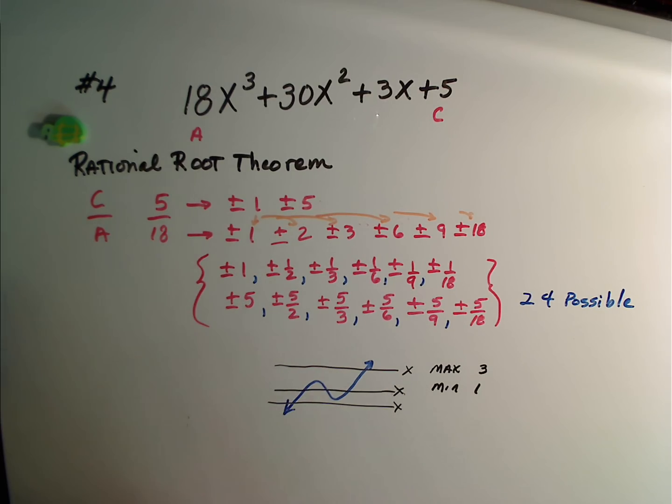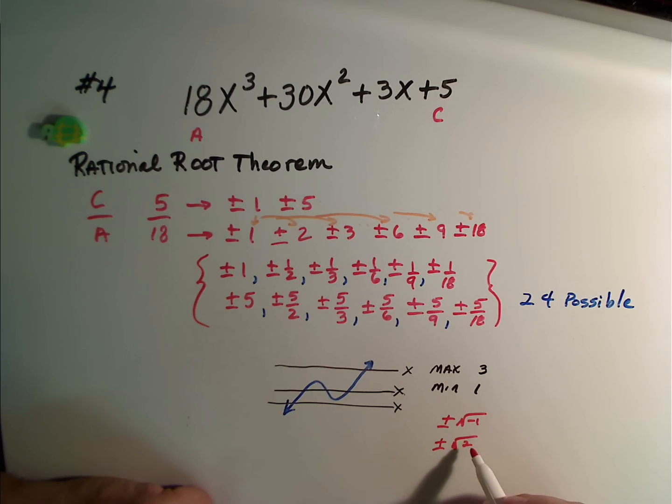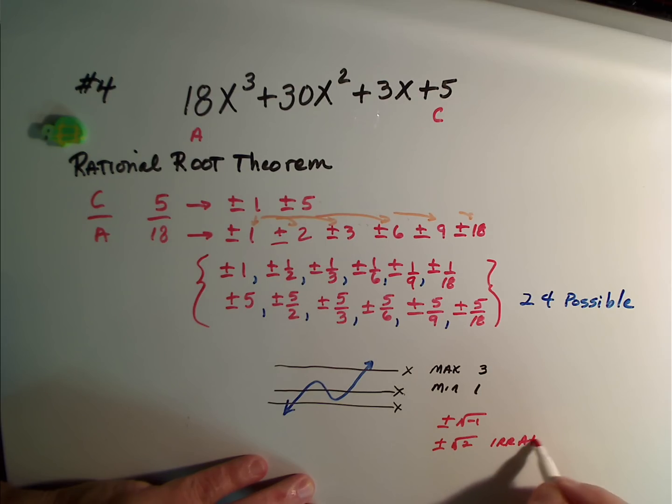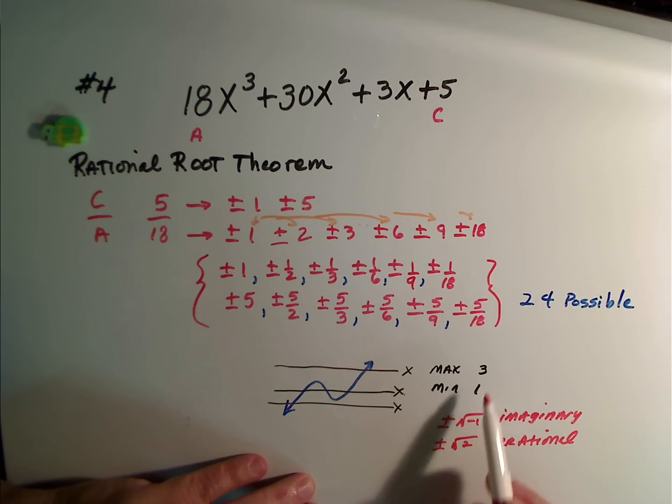Okay, so a couple things to remember. Complex numbers, that is ones that are imaginary, have to come in pairs. And if it were the square root of a number that we can't simplify, such as a prime, it's going to be a real root, but it's going to be irrational. So irrational roots are in pairs. Imaginaries are in pairs. So by deductive reasoning, since this is 3, if 2 are imaginary or 2 are irrational, that leaves one that has to be rational. So one of these has to work.